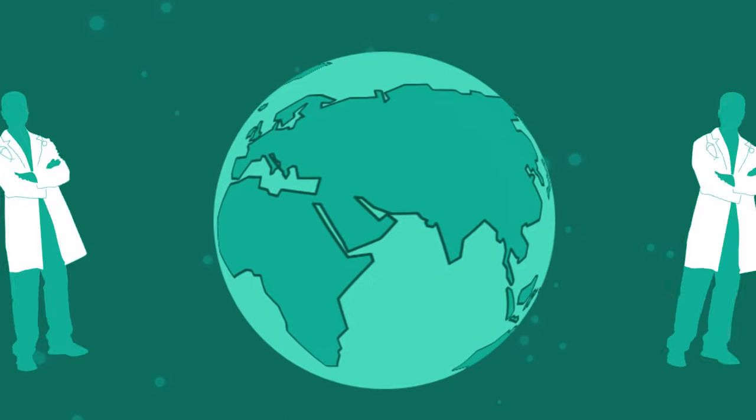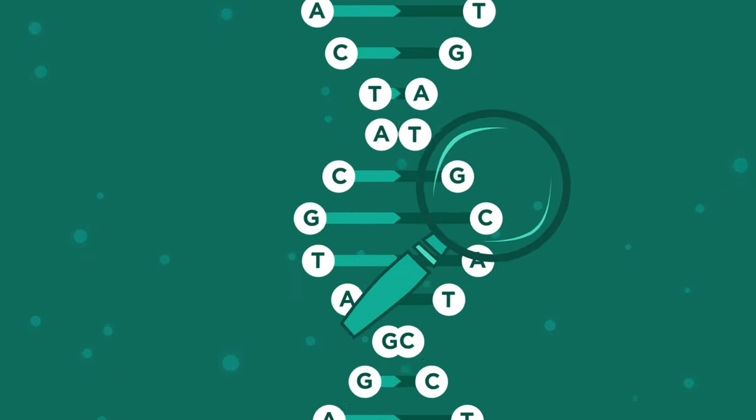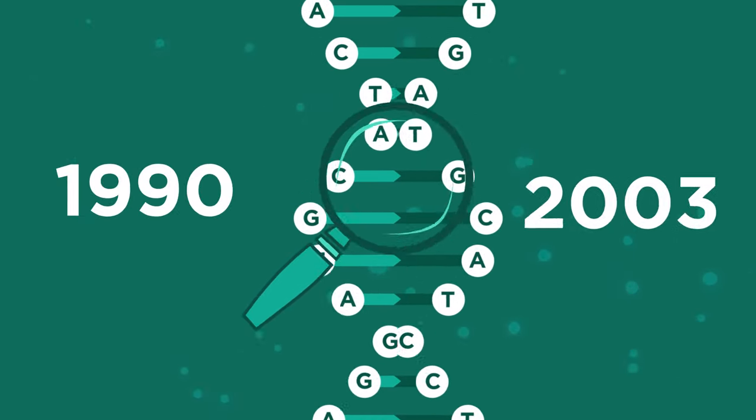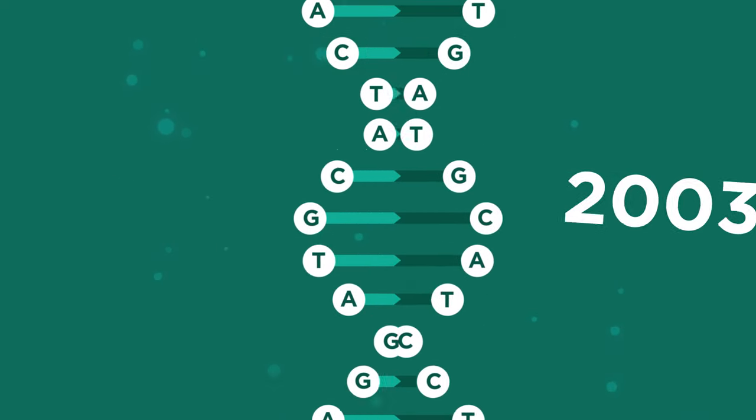The Human Genome Project was an enormous project that saw scientists around the world collaborate to work out the sequences of bases in the human genome. The project started in 1990 and was completed by 2003, two years ahead of schedule.